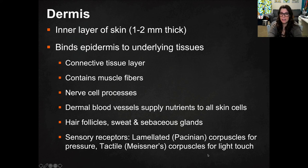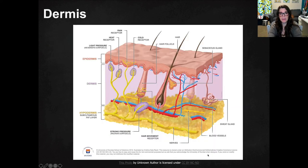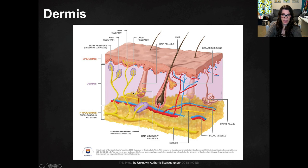Let's look at a picture of the dermis. This is the dermal layer — the purple layer here — and you can see blood vessels flowing through. There is a hair follicle, and you have some receptors attaching to different structures in the skin. This is a sweat gland. The yellow things are nerves.